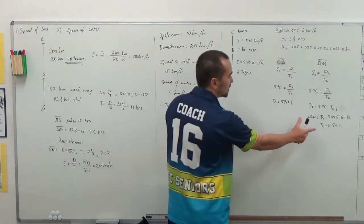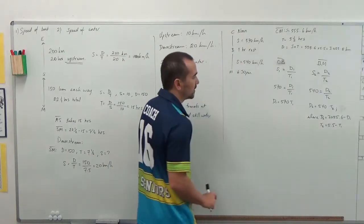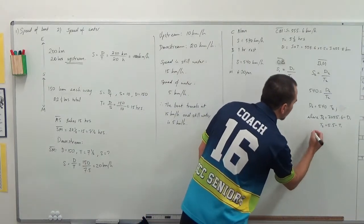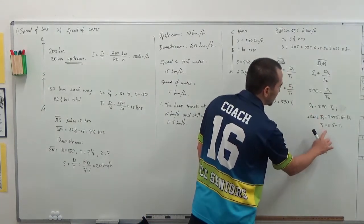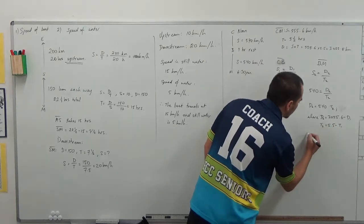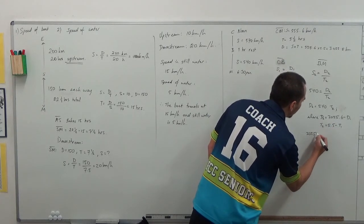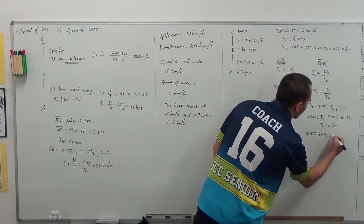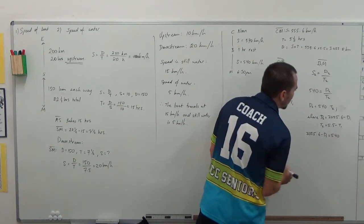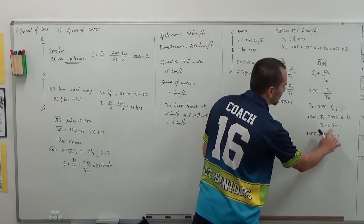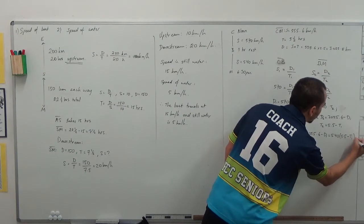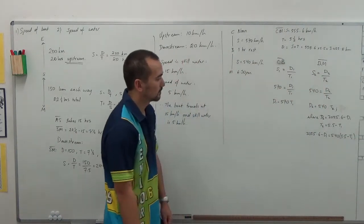So, substituting that over here then, actually I'll finish this off, so D2 is 3055.6 take away D1 is equal to 540 times T2, which is the same as 5.5 take away T1. So, we'll call this one equation one.